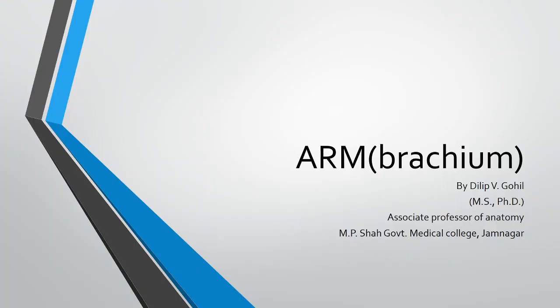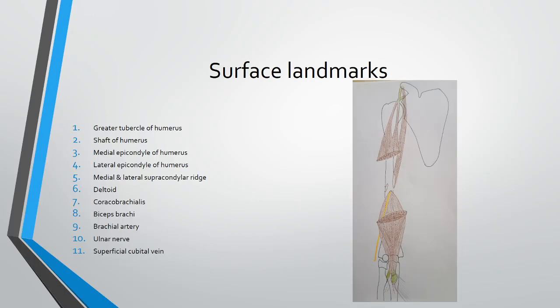Hello, good morning to everyone. Today we'll start about the arm, also known as the brachium. This part is comparatively similar to the thigh. It is situated between the shoulder joint and elbow joint. As the name suggests, brachium, most of the structures like muscles are named like brachium. Now first we'll start from the surface landmarks.